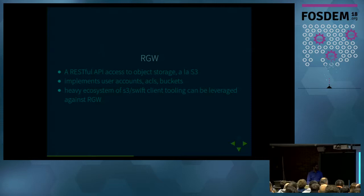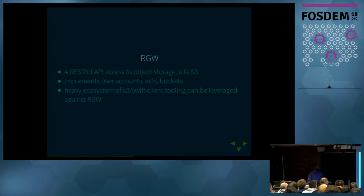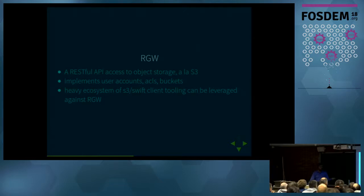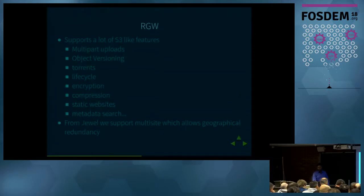Kai already explained about the CEPH cluster in his OpenATIC talk, so I'm not covering the general architecture of CEPH. We provide both Swift and S3 API access to the CEPH cluster — primarily because most client tooling for object storage is already built around these two well-known APIs. It makes sense to expose these APIs rather than our own. We have concepts of user accounts, buckets, ACLs and everything similar to Swift and S3. We support a lot of S3-like features and we have cross-access with S3 and Swift.